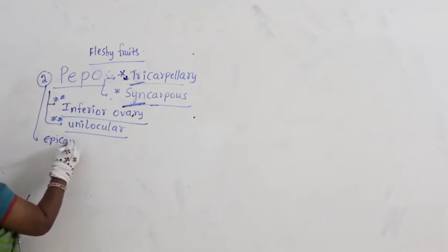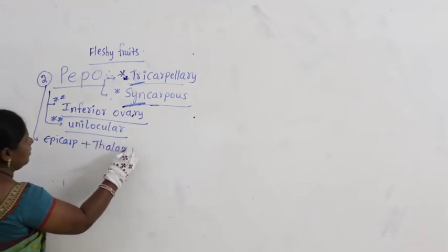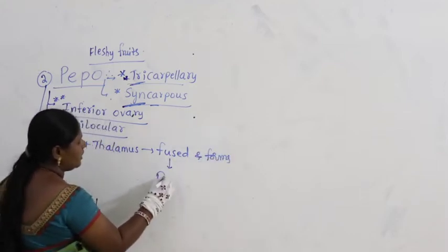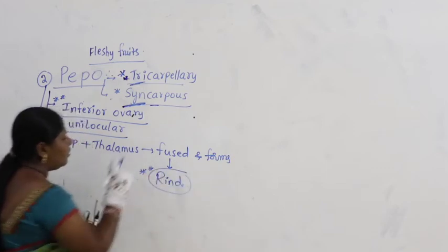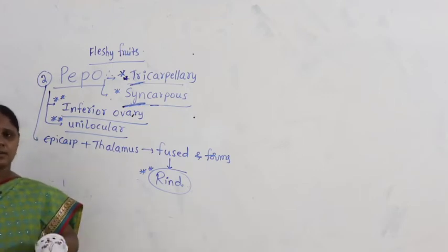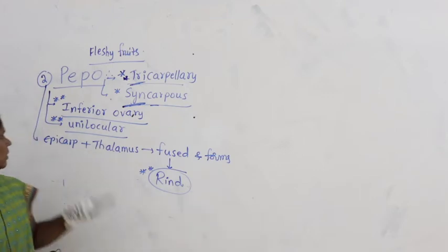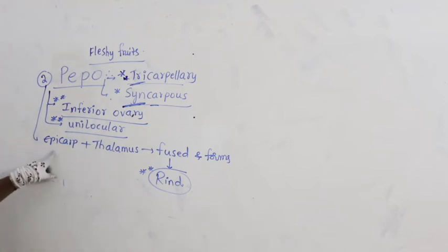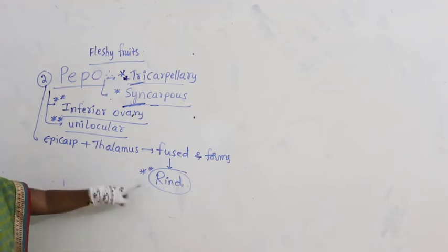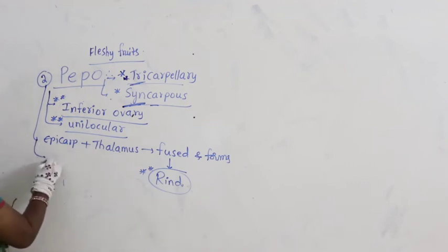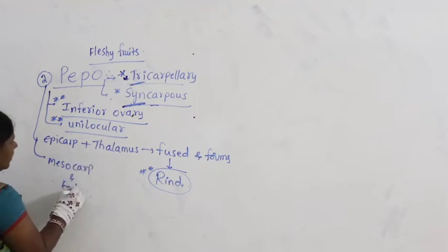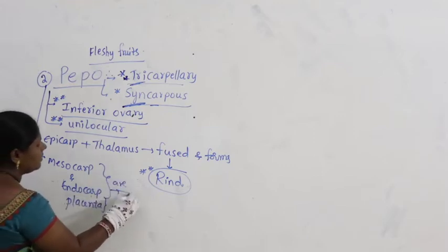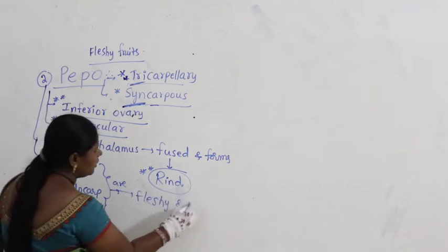In pepo, epicarp and thalamus both are fused and form the rind. Mesocarp and endocarp, including placenta, are fleshy and edible.